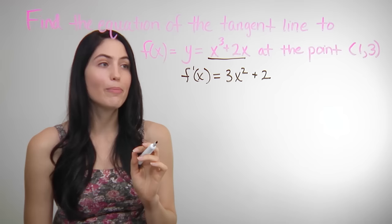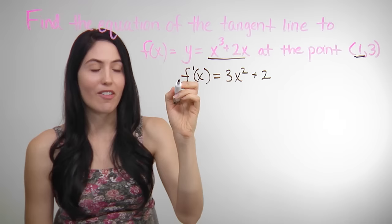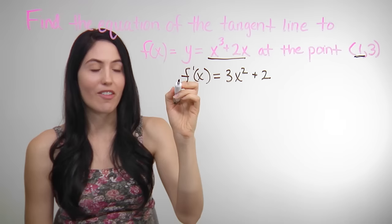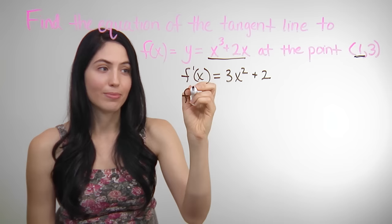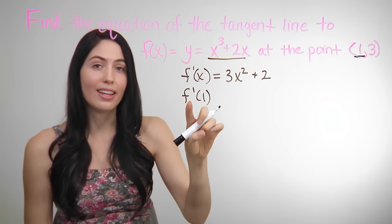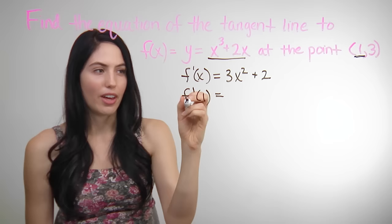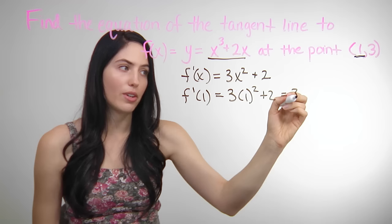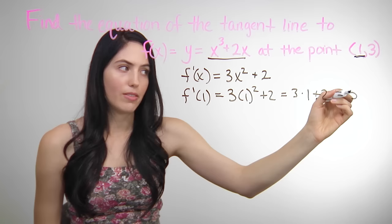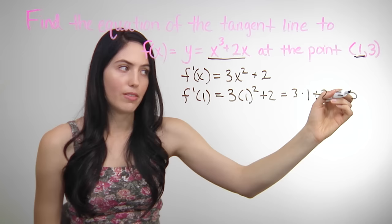The second step is always to take the x coordinate that you're given in the point and plug it into f prime of x. You can call that f prime of 1 since your x coordinate is 1. So you take that number and you're going to plug it into what you just found — the derivative. When you plug in 1 for x, you have 3 times 1 squared plus 2, which simplifies to 3 times 1 plus 2, which is just 5.